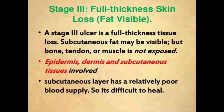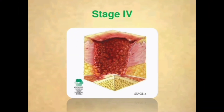Stage three is full thickness skin loss with fat visible. A stage three ulcer involves full thickness tissue loss where subcutaneous fat may be visible, but bone, tendon, or muscle is not exposed. The epidermis, dermis, and subcutaneous tissue are all involved.